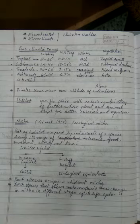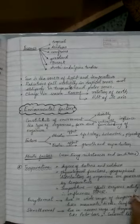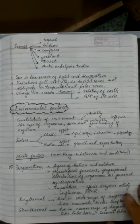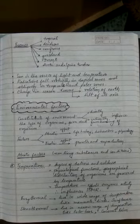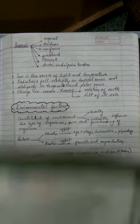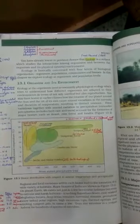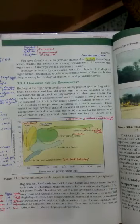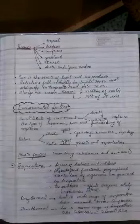Organisms that show metamorphosis in their life cycle generally occupy different niches at different life stages. We also learned about the various biomes listed in the NCERT: tropical, deciduous, coniferous, grassland, desert, arctic, and alpine tundra. The sun is the source of light, temperature, and radiation — radiations fall vertically in the tropical zone and obliquely in the temperate and polar zones. Seasons change because of the rotation of the Earth and the tilt of its axis. We also looked at a graphical representation showing mean annual precipitation and mean annual temperature varying across different biomes.